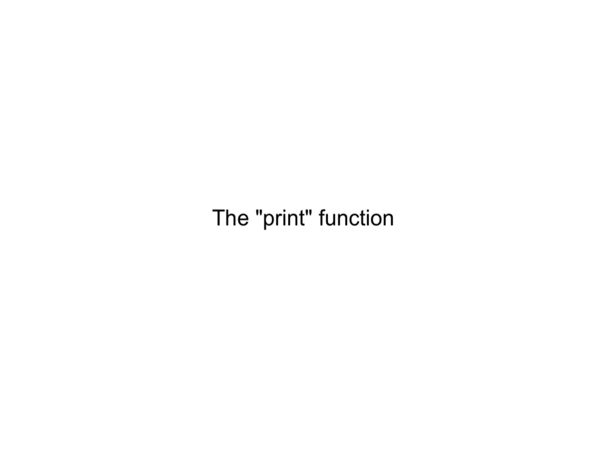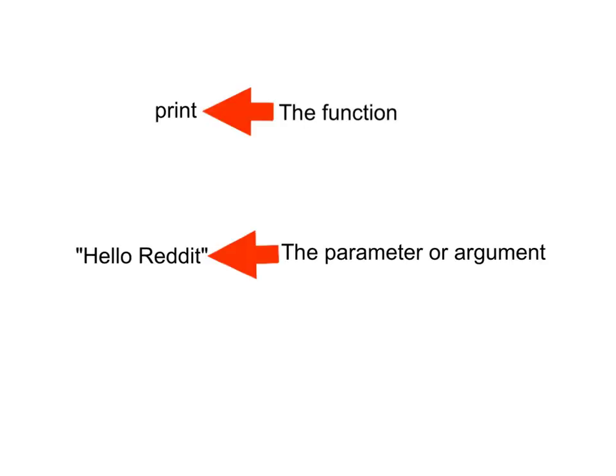Imagine that print is a function that sits in memory at some address, just like we talked about in the previous lesson. Now suppose that I want to print some specific text, like "Hello Reddit." How could I do that? Notice that it is not enough to just simply call the print function — I need to have a way of specifying what it is I want to print. Whenever you give a function extra information that it needs in order to perform a task, that extra information is known as a parameter, or an argument.